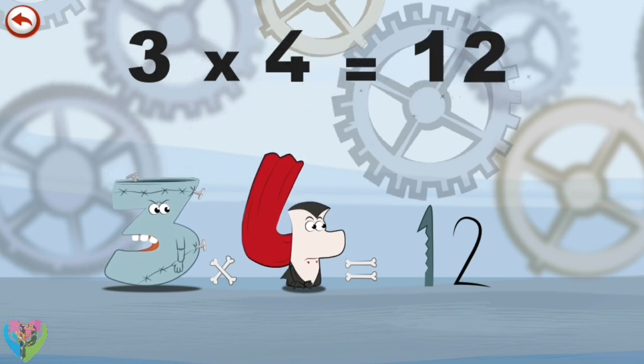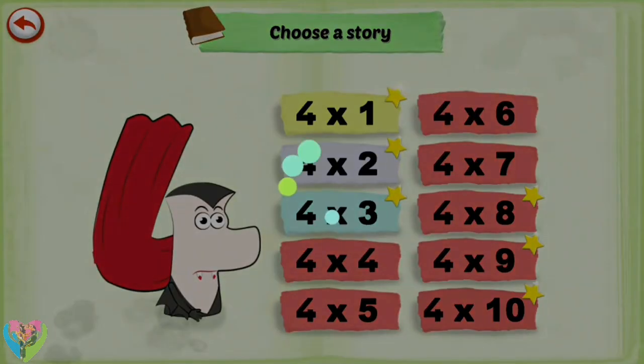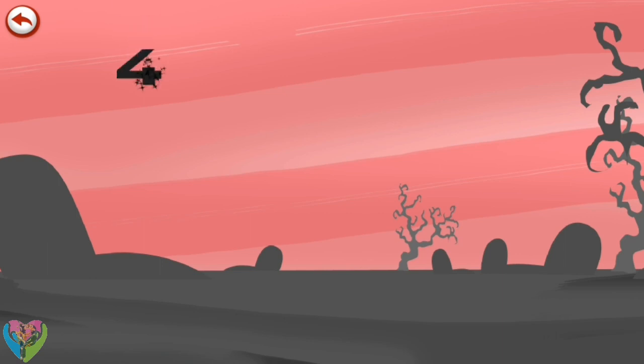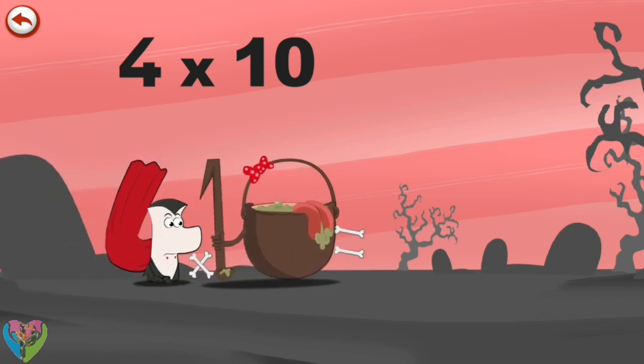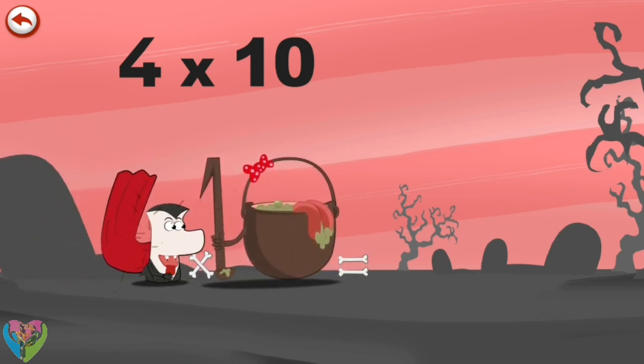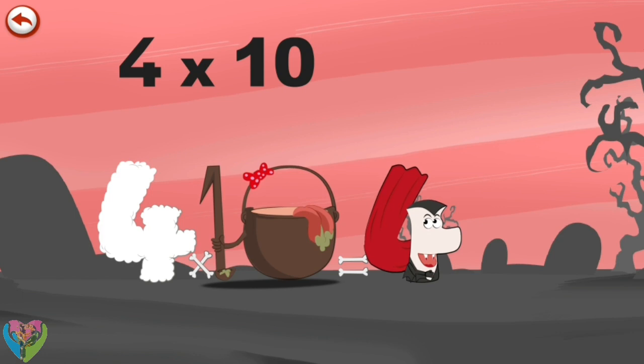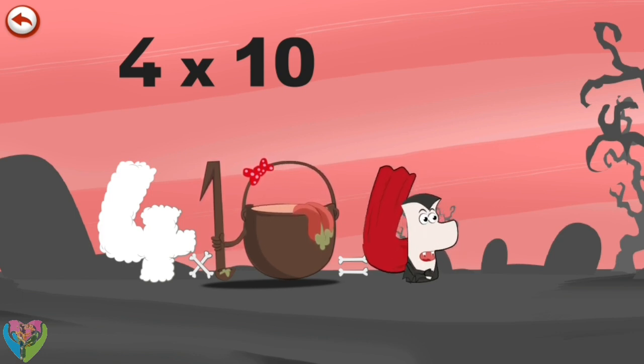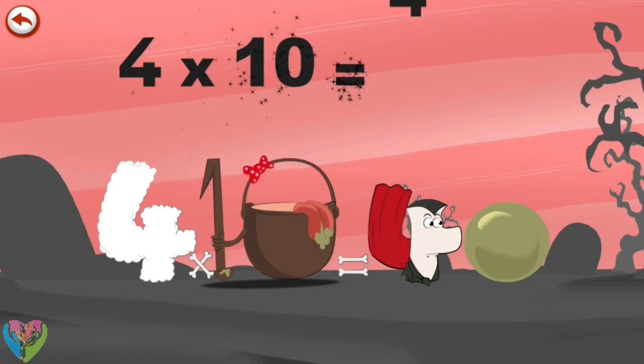What's the story of 4 times 10? When Vamp 4 meets the potion magic 10, it makes him very, very hungry. He dives headfirst into the cauldron and comes out feeling very full. He gives an enormous magic burp and blows a bubble in the shape of a 0. 4 times 10 is 40.